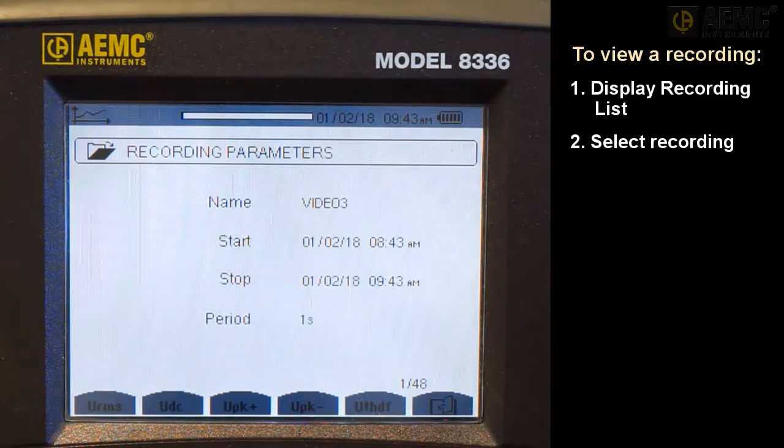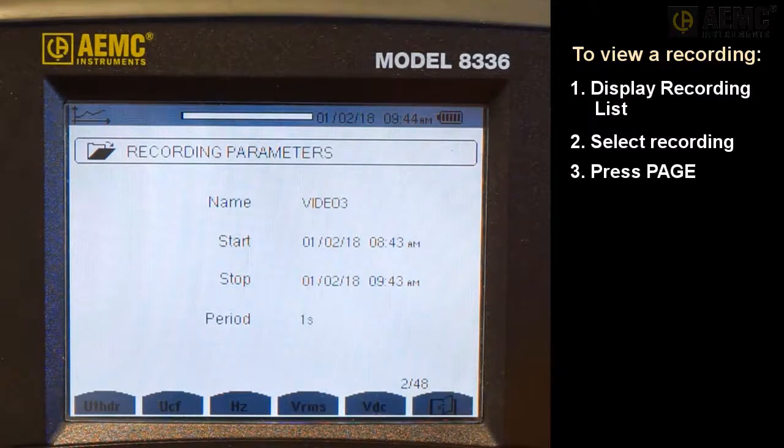The first page of the recording shows basic information, including the recording name, the start and stop times, and the sample period used. In the lower right corner is the page number, which in this example, indicates we are looking at the first page of a 48-page recording. The number of pages is determined by the number of quantities selected in the Trend Configuration screen. Press the Page Function button on the far right to cycle through the pages. As you do this, the remaining Function buttons refresh, to correspond with the data contained on the selected page.